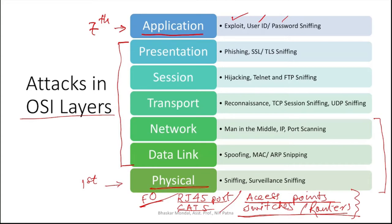At the physical layer, since you only have access to hardware like cables and ports, the main attack that can happen is tapping — which we call sniffing. You can only sniff communications as they happen. One kind of sniffing here is called surveillance sniffing. All other kinds of attacks happen in the intermediate five layers.